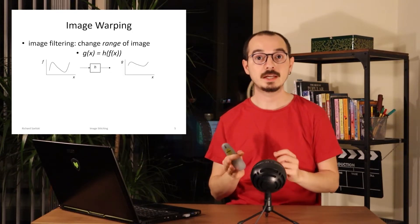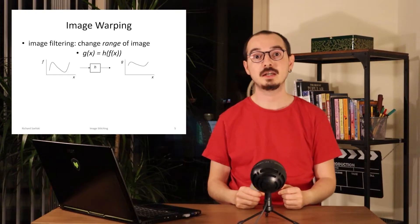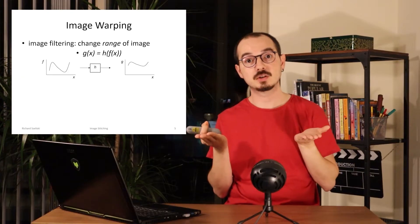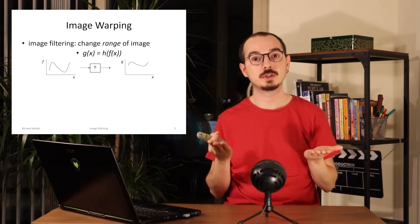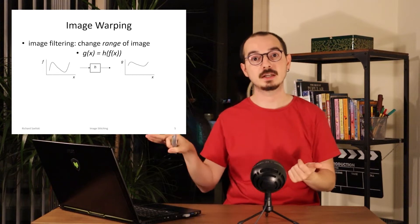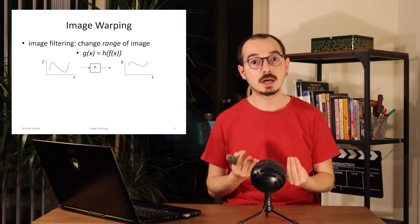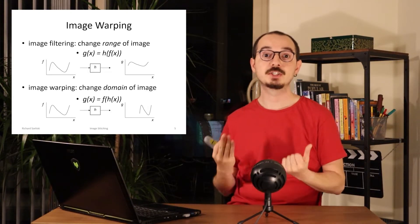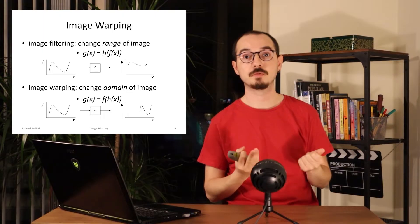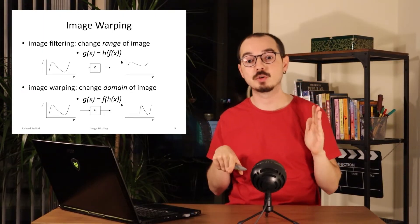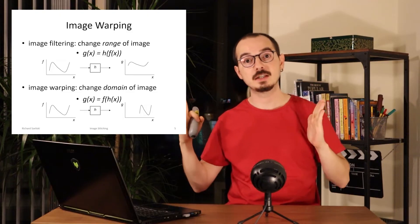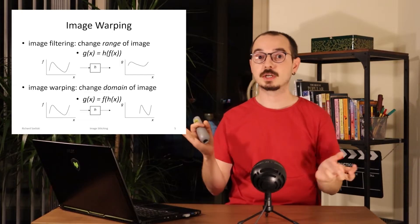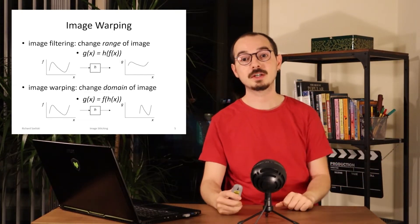Until now, when we played with images, we have done mainly image filtering, which changes the image brightness values — whether smoothing or creating edges, we are dealing with actual pixel values. When we talk about warping, we will change the domain of the image, or we will change the x and y coordinates of the image. We will look at what types of warping we can define for images.